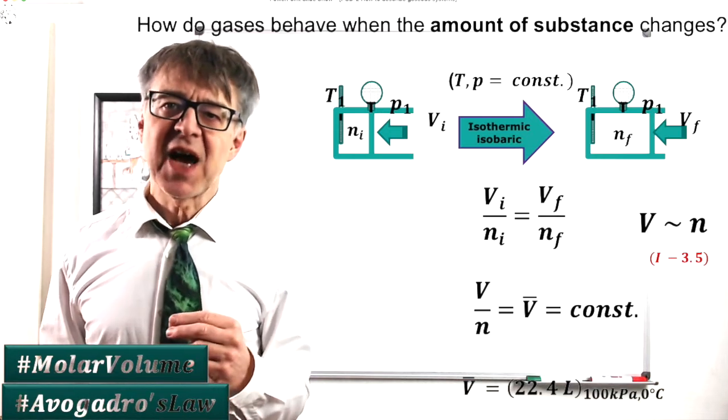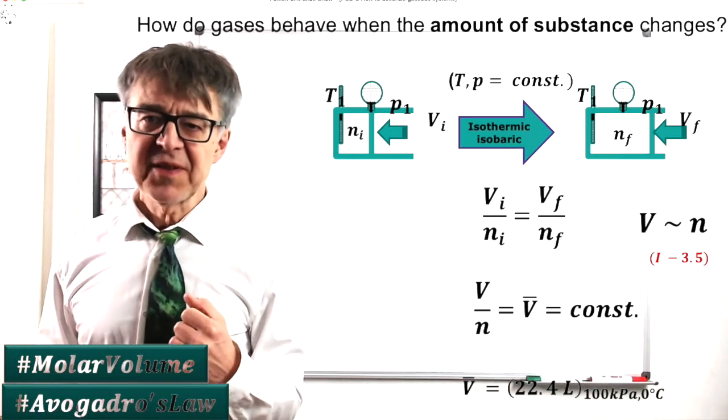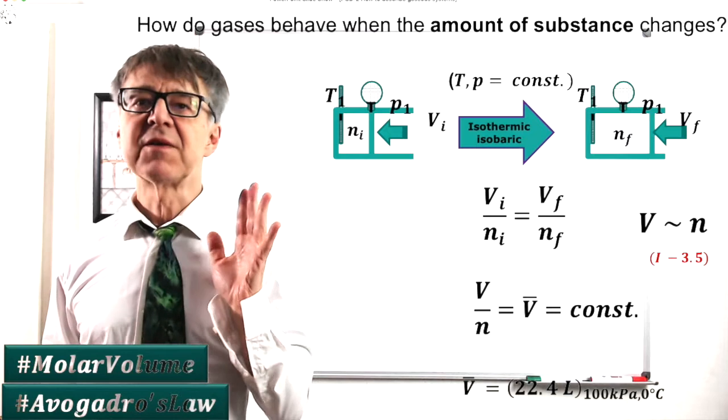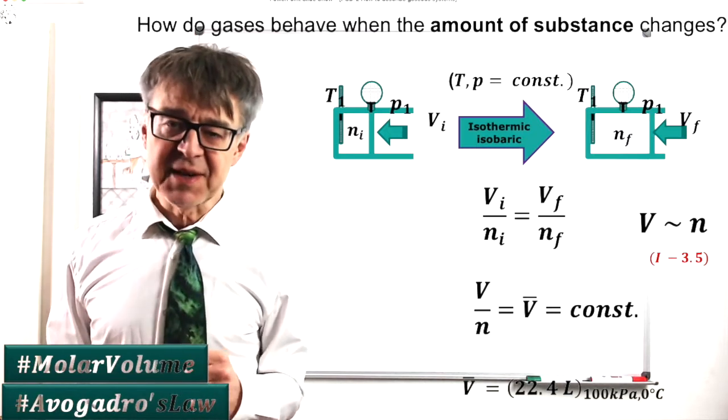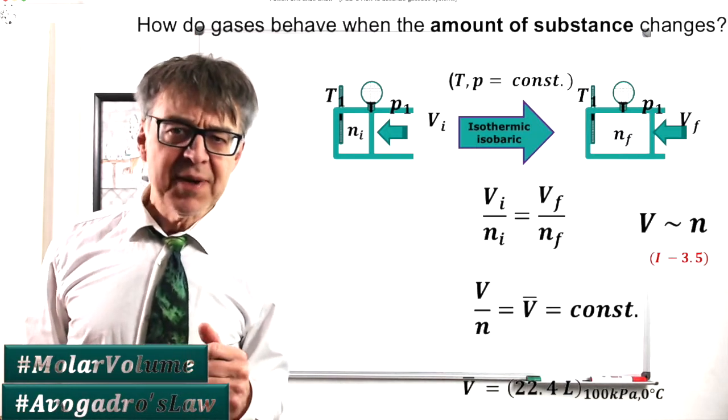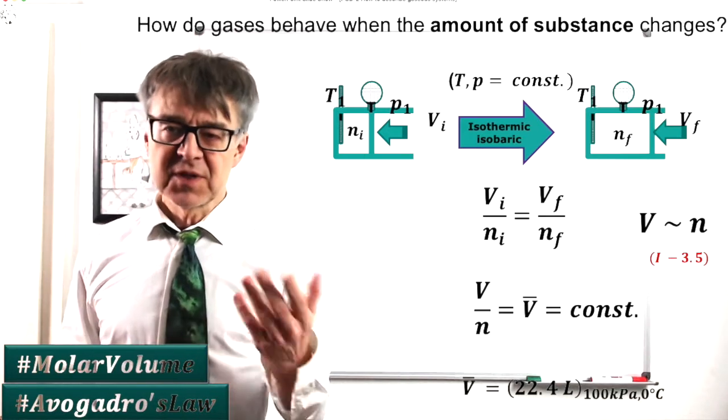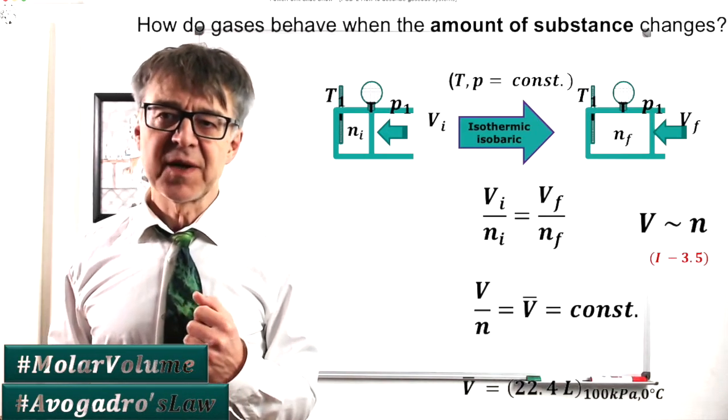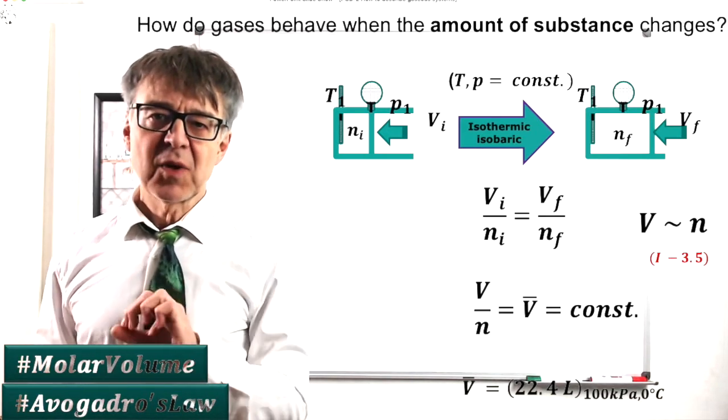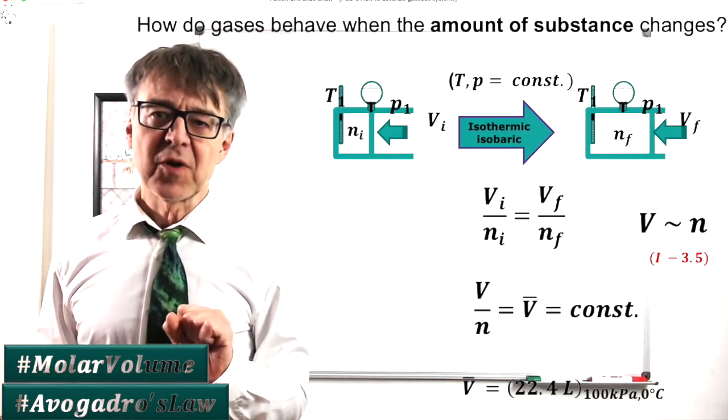This was formulated by Avogadro and his hypothesis, equal amounts of different gases take up the same volume. For example, at standard conditions, 0 degrees Celsius and 100 kilopascals, this molar volume is 22.4 liters.